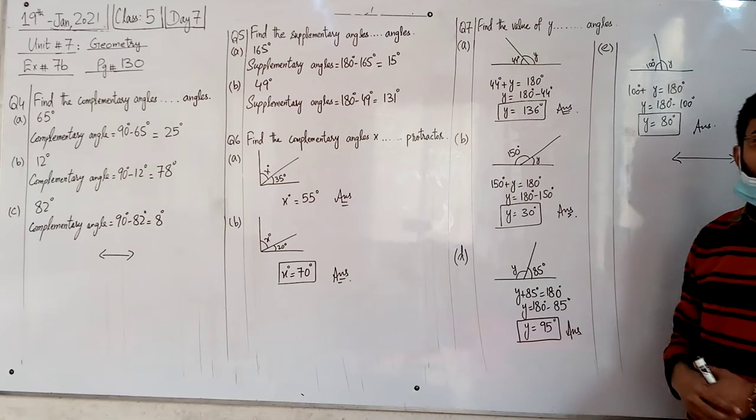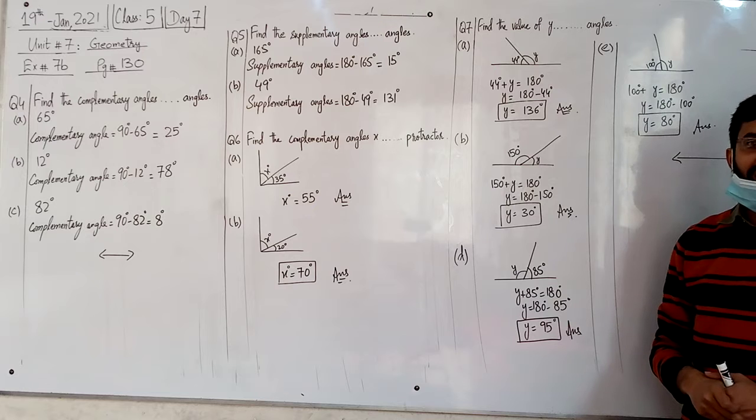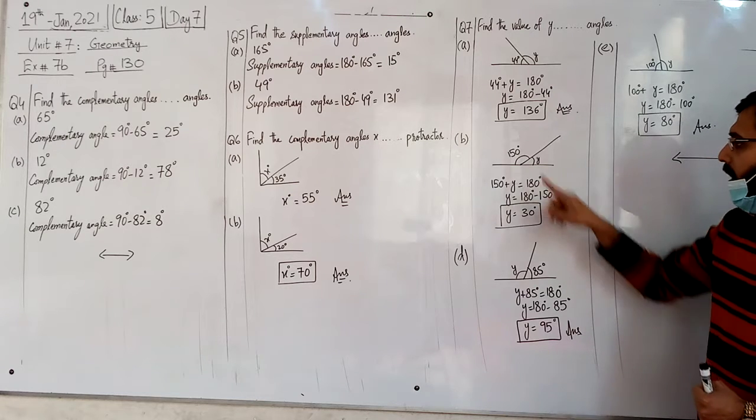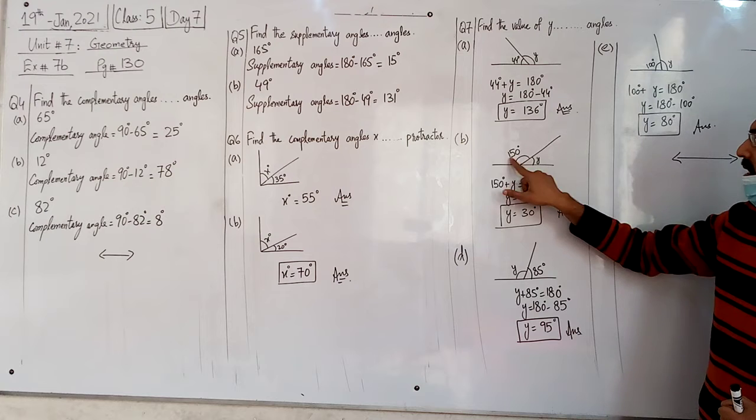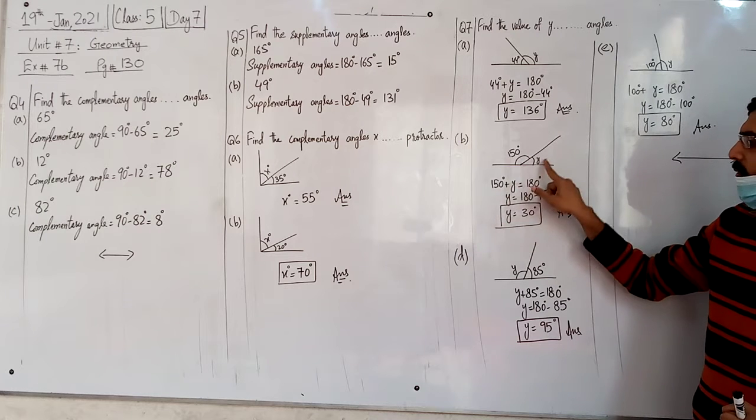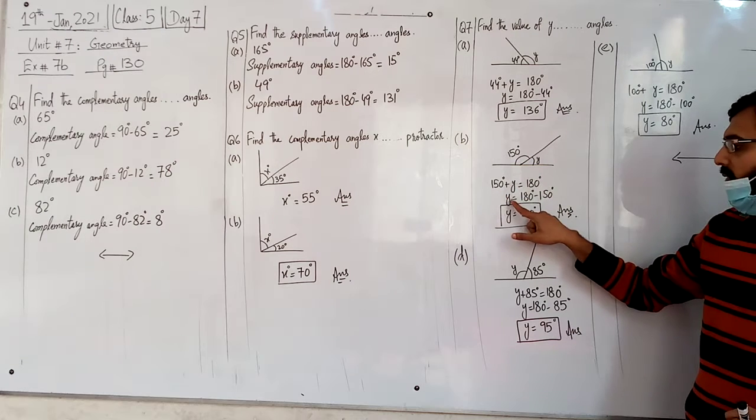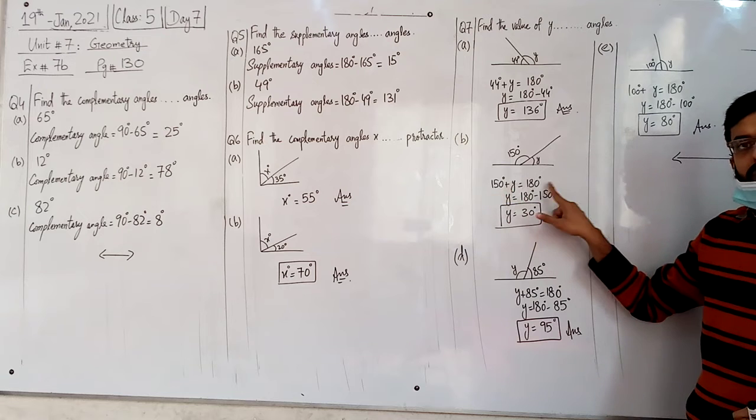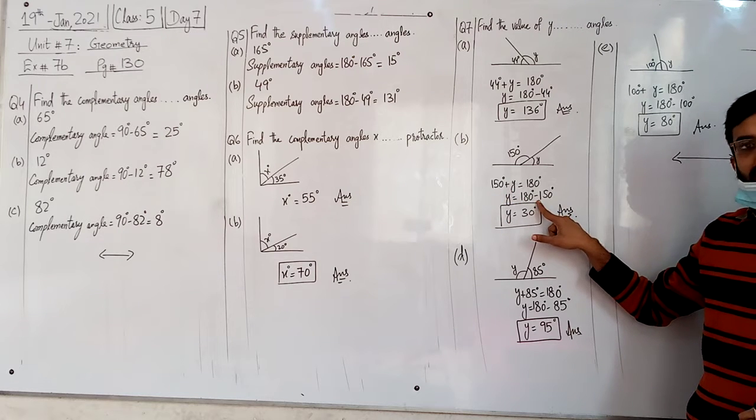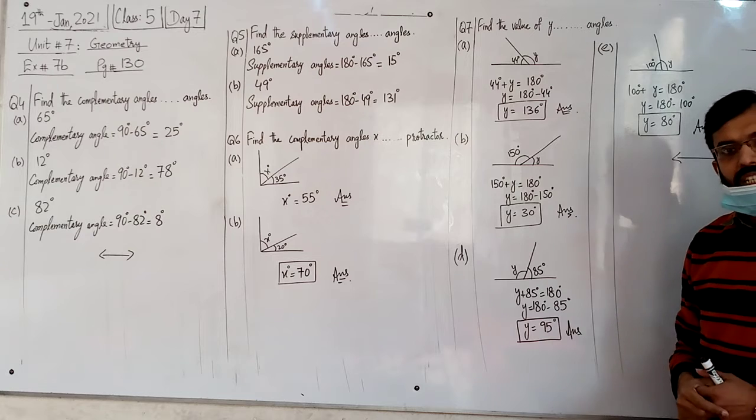If y value plus 44 degrees equals 180, then y value equals 180 minus 44, so y value is 136 degrees. This is the answer.